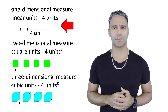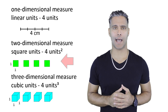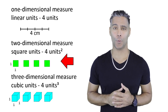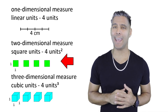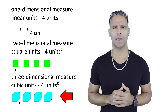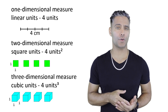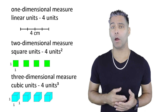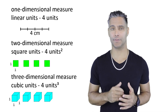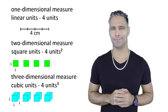Something one-dimensional is measured in linear units, and two-dimensional objects are measured in square units. And of course, something that has three dimensions is measured in cubic units. It is important to remember that linear, square, and cubic measures are measures in the one, two, and three dimensions, respectively, and as such they are labeled differently.